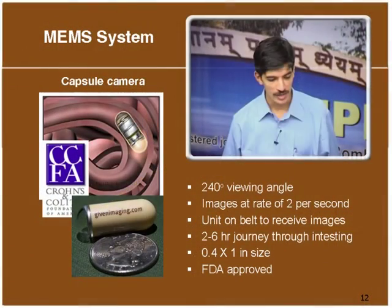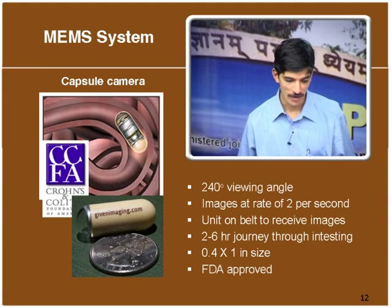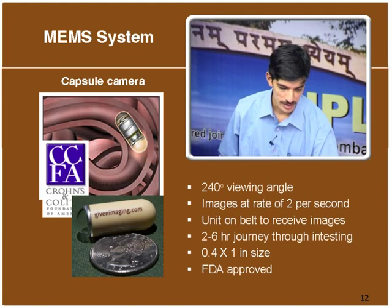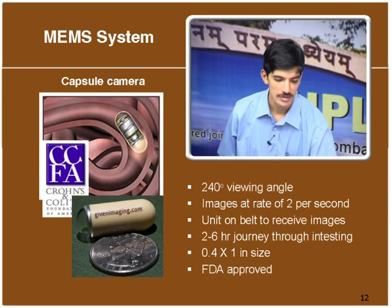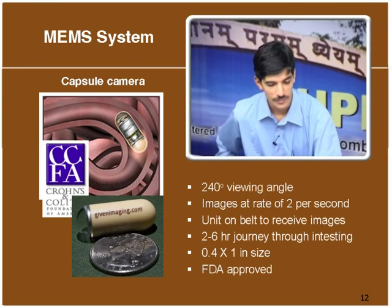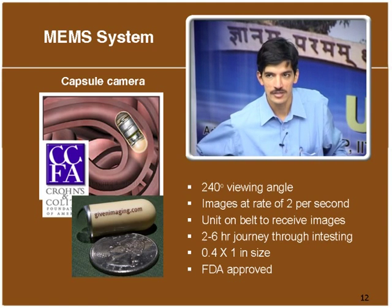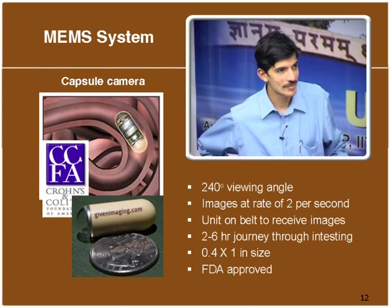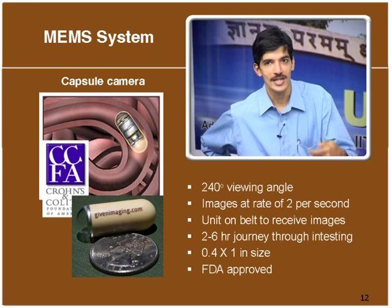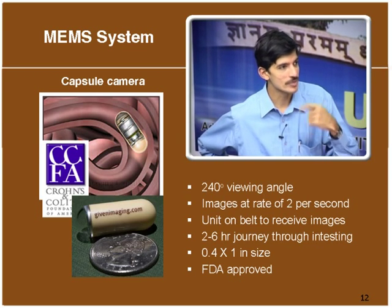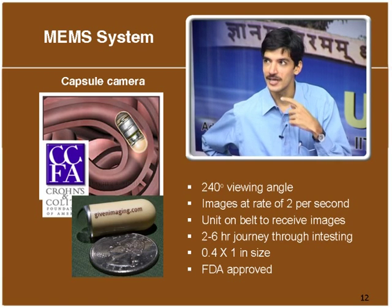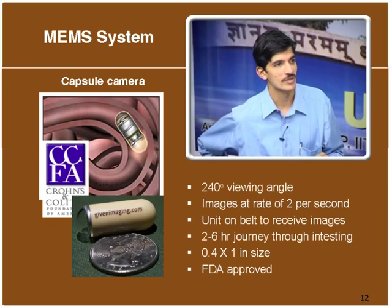This is an application in endoscopy: a capsule containing all the sensing elements, a light, and a camera. It takes images at 2 images per second and transmits them to a small pager-like device. The painful process of conventional endoscopy for patients can be avoided using this kind of capsule. This product has already been FDA-approved and is in use.